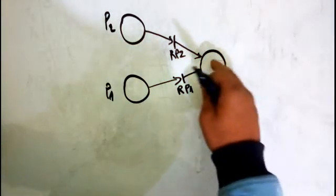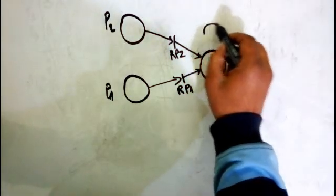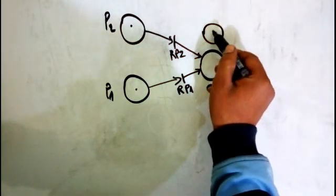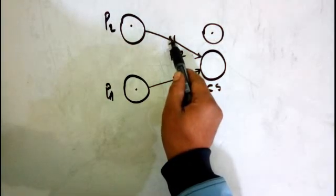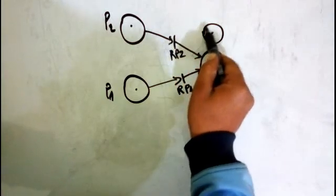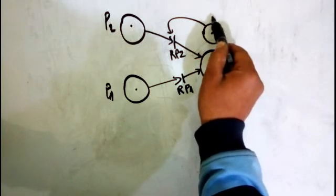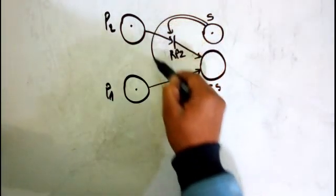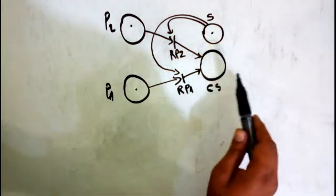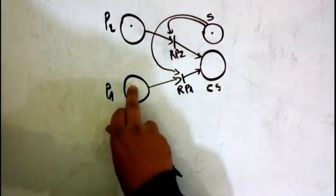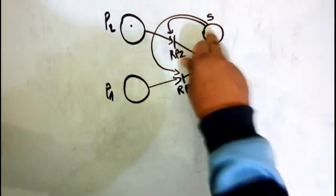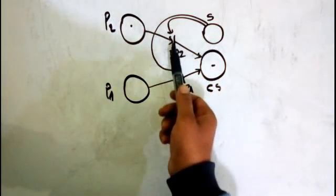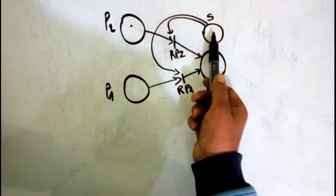What we can do is add a place here - let's call it a semaphore. Initially when we start the system, we put one token here. When we run a transition, we make this semaphore the input of that transition. To run it, it needs one token to be in the semaphore. When we fire this transition, we remove the semaphore token and we put one token in the critical section.